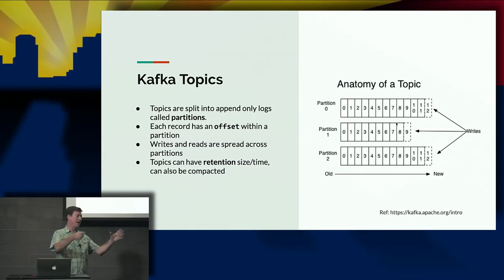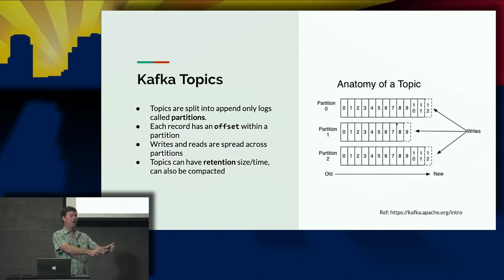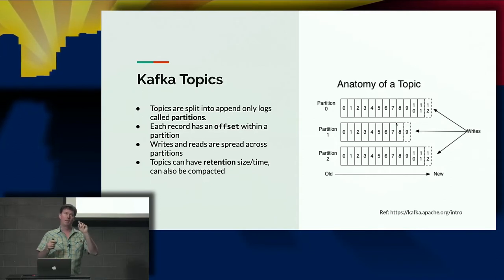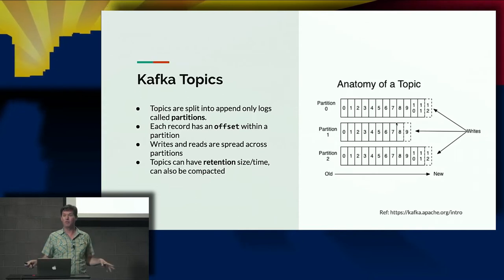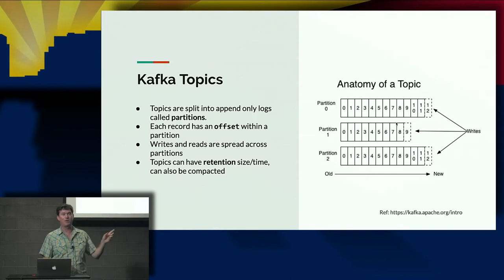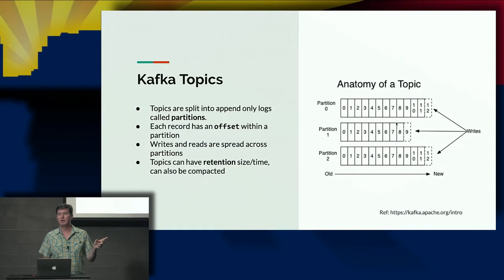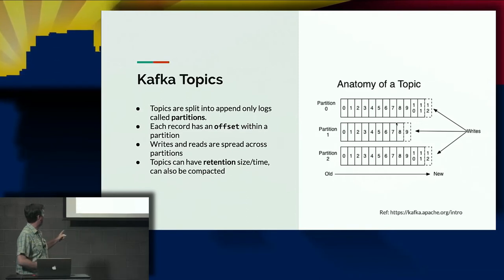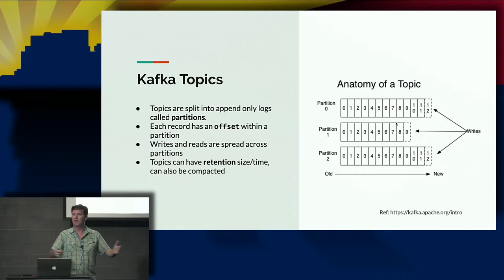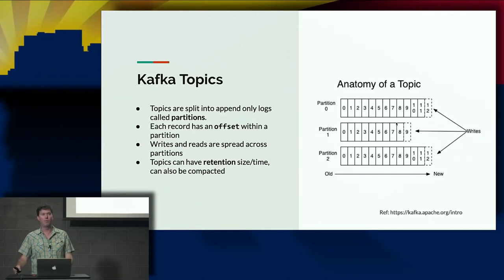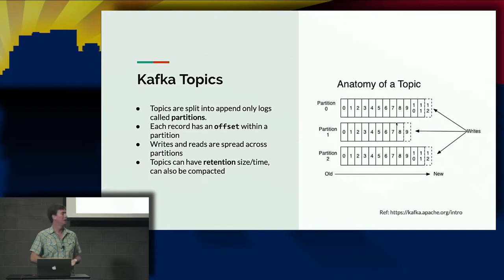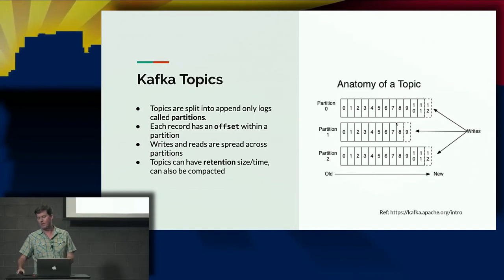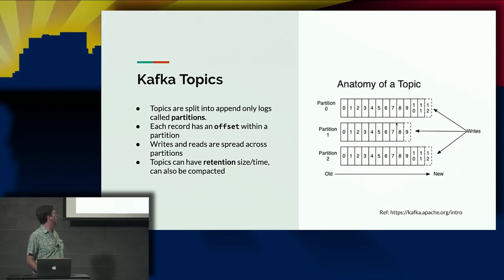Topics can have retention size and time — this is super important. When you create a Kafka topic, you can tell Kafka not to keep any records older than one day, for example. You can also set a retention size: if the size of this Kafka topic exceeds that limit, you start discarding the oldest records. Kafka is generally meant to work as a queue; maybe you store a month's worth or a day's worth of data.